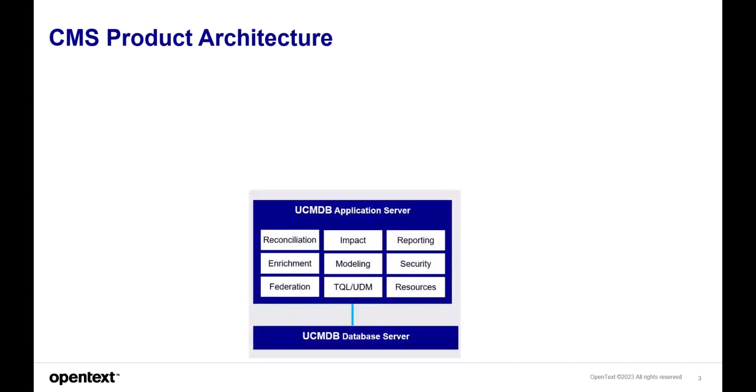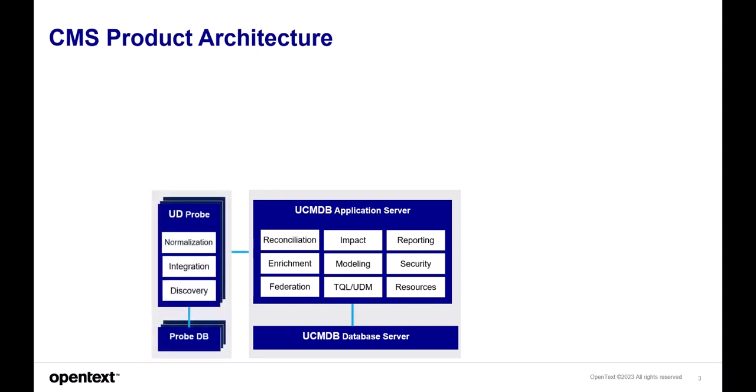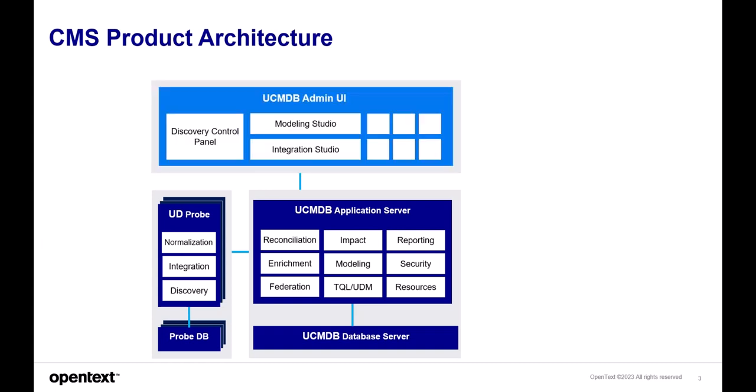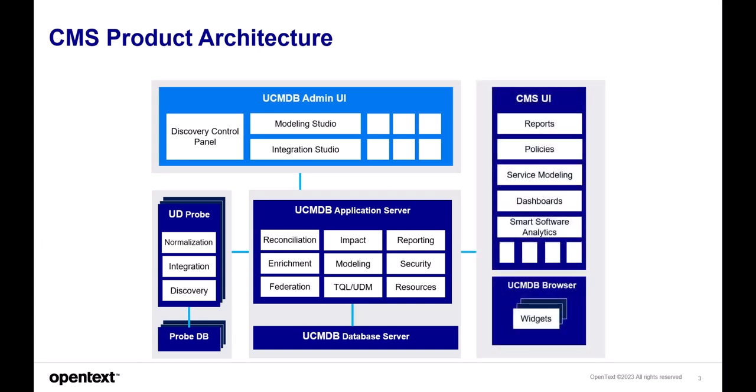The CMS product architecture consists of the UCMDB application server with its associated database, the UDProbe or Universal Discovery Probe or Dataflow Probe with its associated probe database — this is what we are concentrating on installing today — the UCMDB Administrative User Interface, also known as the Local Client, and the CMS UI, an HTML5-based web user interface.